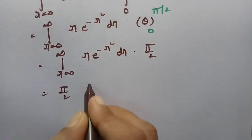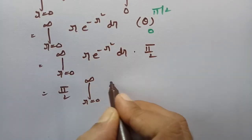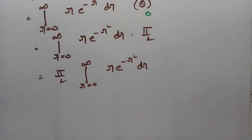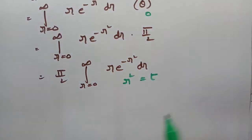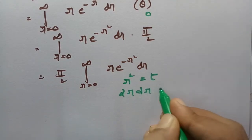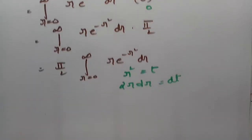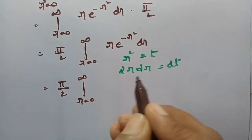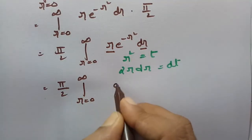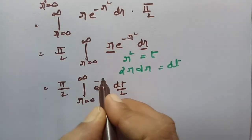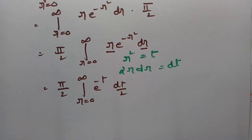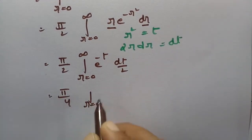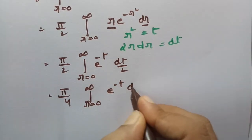So pi by 2 I keep outside. Now for the r integral I use the substitution: let t equal r squared, so r dr will be dt by 2. So in place of r dr I write dt by 2 and e to the power minus r squared becomes e to the power minus t. If I send this 2 to outside this will be pi by 4, integral r equal to 0 to infinity, e to the power minus t into dt.